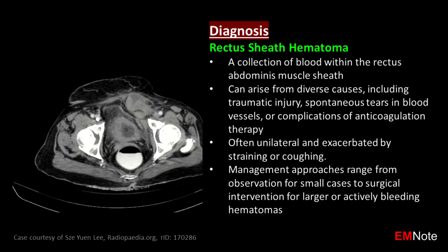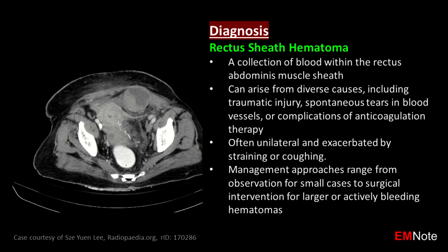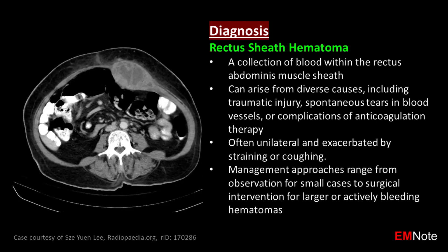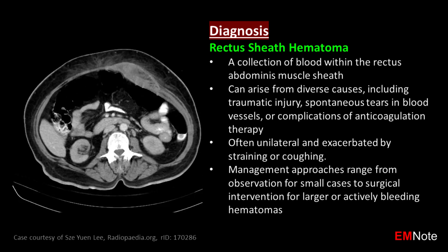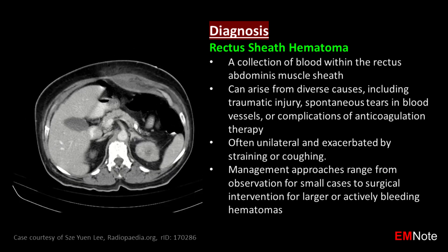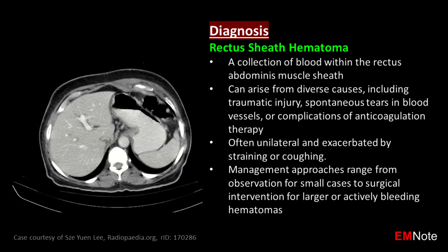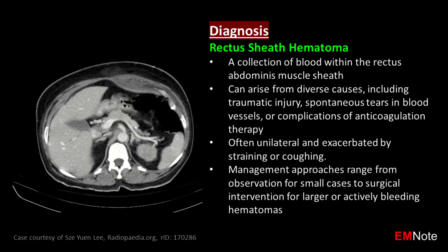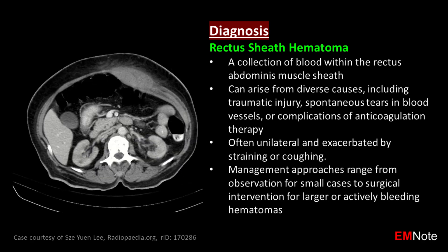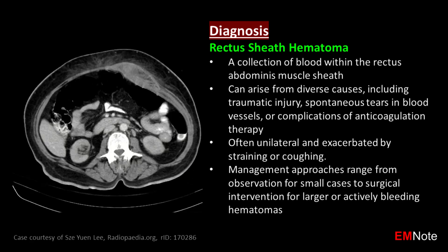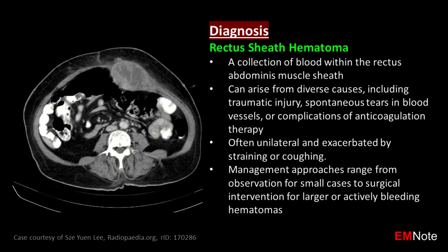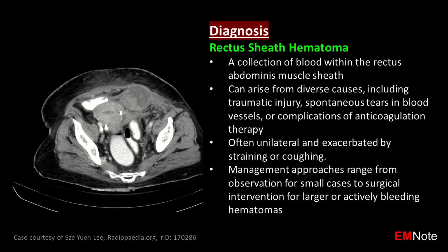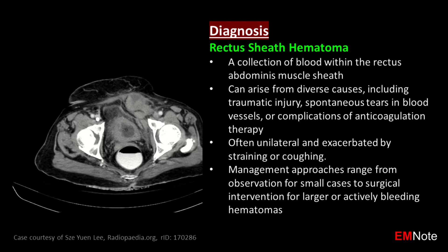Rectus sheath hematoma can arise from diverse causes, including traumatic injury, spontaneous tears in blood vessels, or complications of anticoagulation therapy. It is often unilateral and exacerbated by straining or coughing.